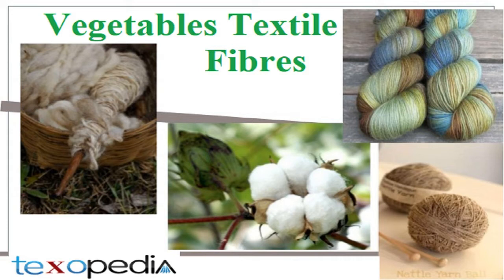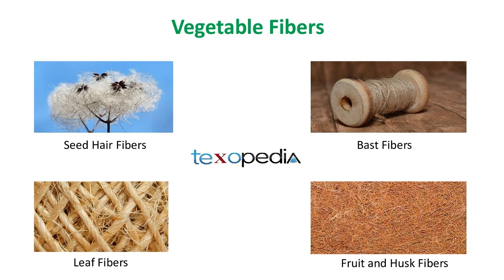Friends, the vegetable fibers are derived from plants. They are classified according to the source in the plant where they occur and from which they are extracted. For example, some fibers are obtained from seeds like cotton and kapok. Some fibers occur from the bast tissues like jute, hemp, kenaf and remy.